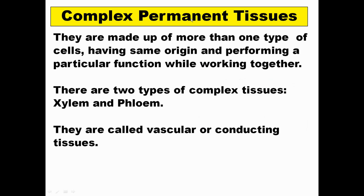Now comes complex permanent tissue. When the term complex comes to mind, remember that these tissues have various types of cells together — they are made up of more than one type of cell, having the same origin and performing a particular function. They work in coordination. Complex tissues are of two types: xylem and phloem, referred to as vascular tissue or conducting tissue.